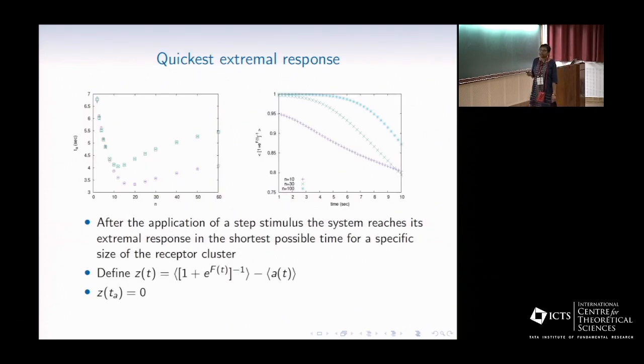Next, we look at the variation of t* as a function of the receptor cluster size, and we find there is a minimum. Which means, there is a specific size of the receptor cluster or the signaling team, at which the extremal response is reached in the shortest possible time.